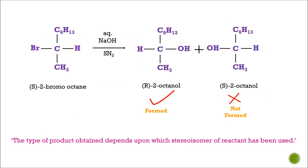The type of product obtained depends upon which stereoisomer of reactant has been used. So the R isomer forms the S product, while the S isomer forms the R product.